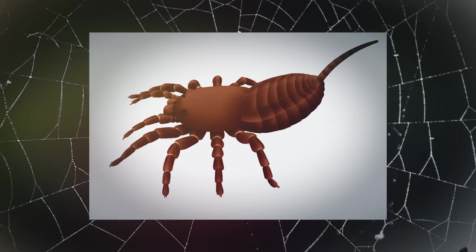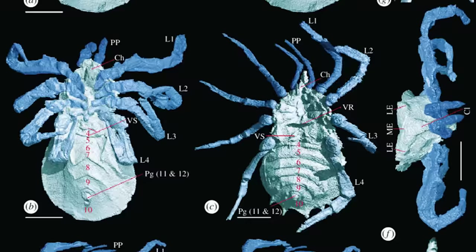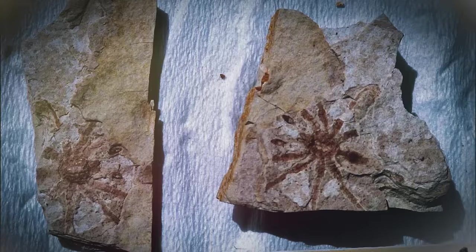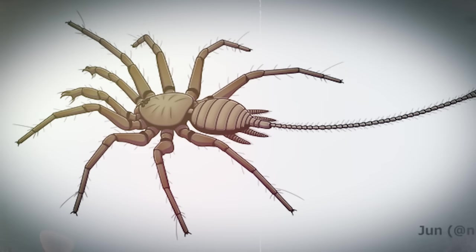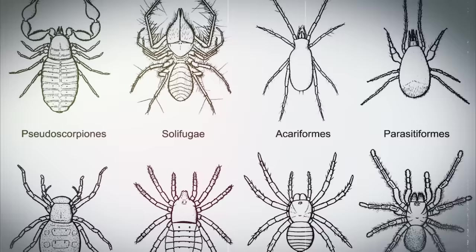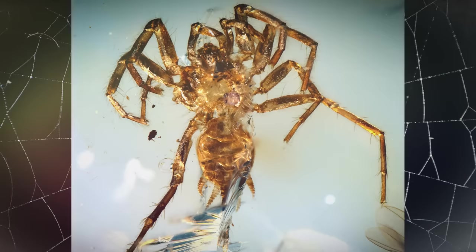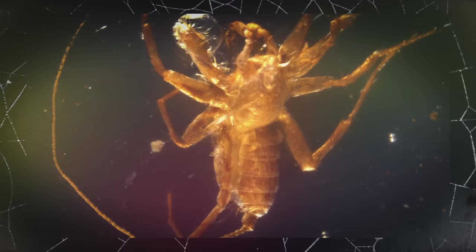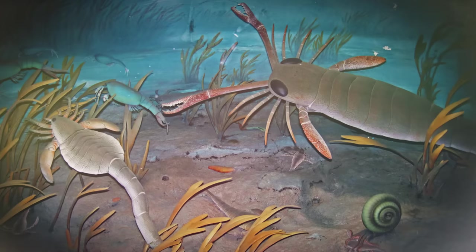Uranidia are considered some of the earliest representatives of the arachnid class, which includes spiders, scorpions, ticks, and mites. It's important to note that the evolution of spiders is a complex process, and the Uranidia are just one group that represents early stages in spider evolution. Fossil evidence suggests that Uranidia lived on land and had simple spinnerets for silk production, in contrast to some other early arachnids that had more aquatic lifestyles.